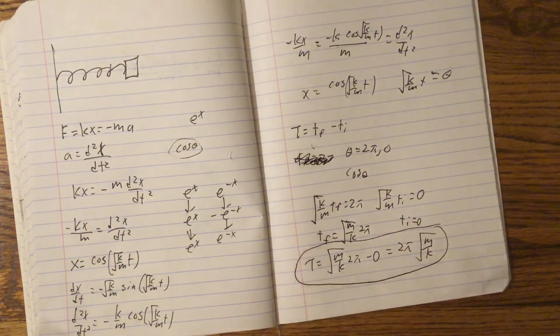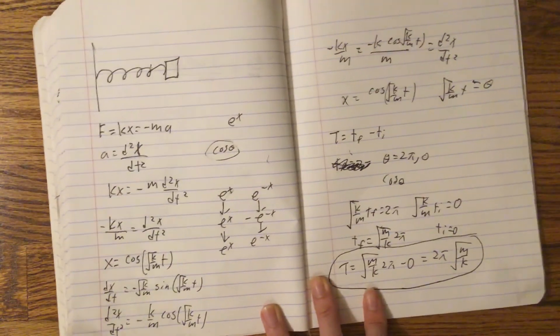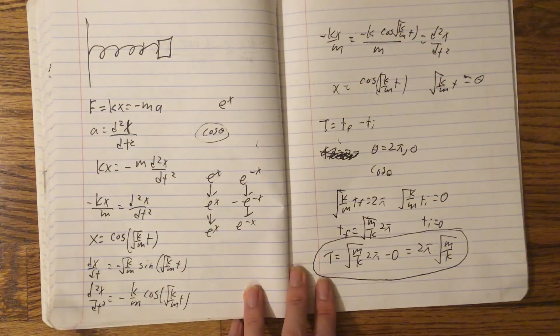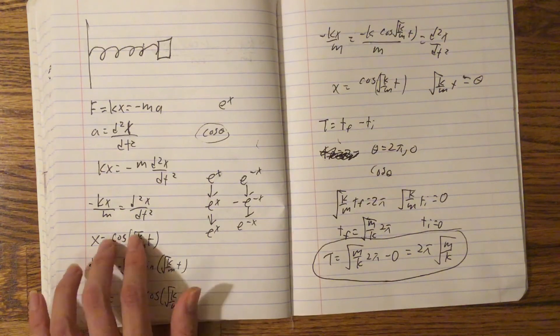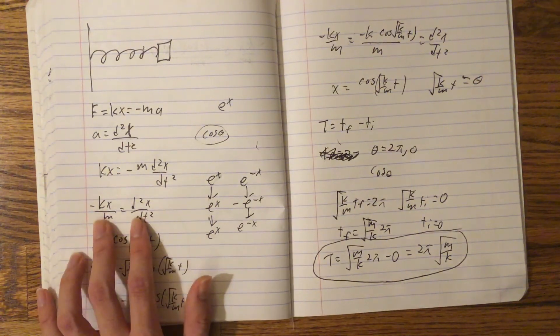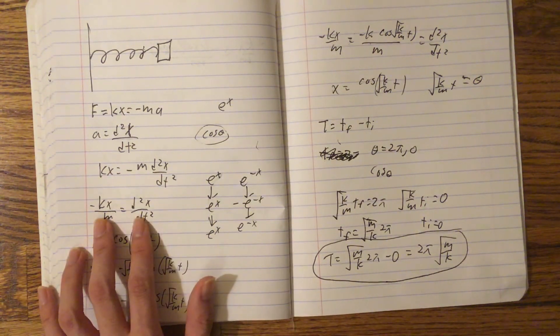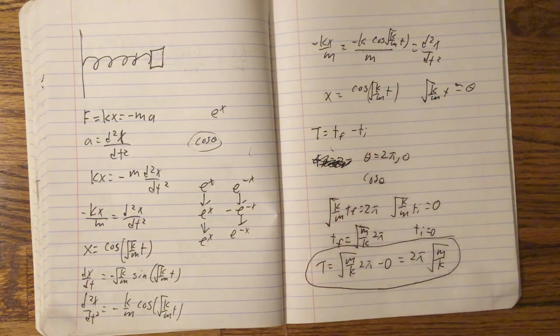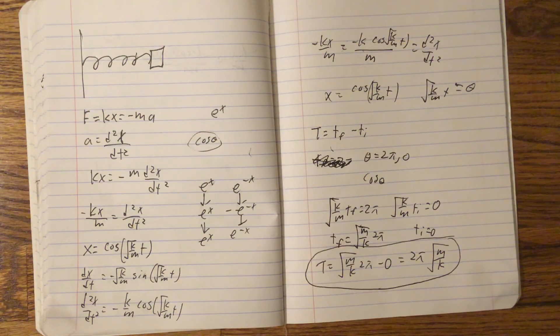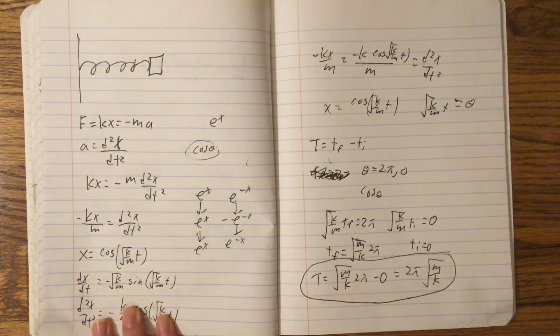And that's the derivation. Thank you. So, I guess the hardest part to understand would be that the only function that matches this type of behavior is a cosine or sine function. And the second hardest part to understand is what theta must be equal to. Yeah, I don't know how to explain those better. Thank you.